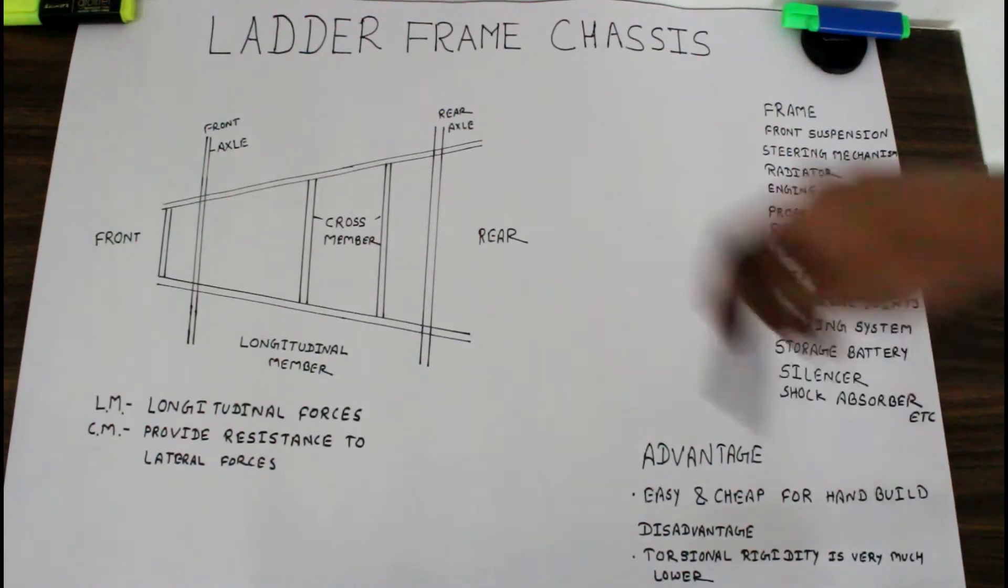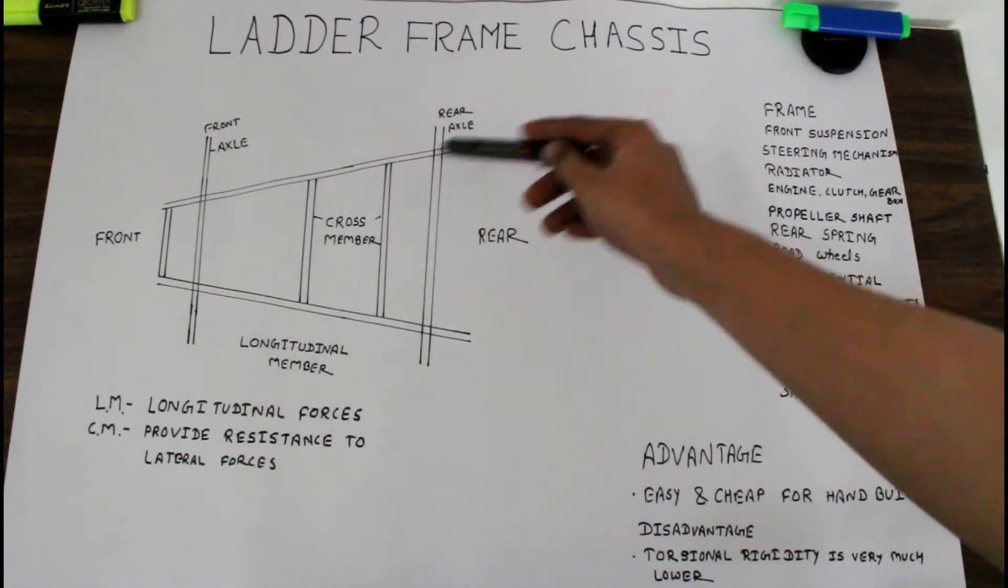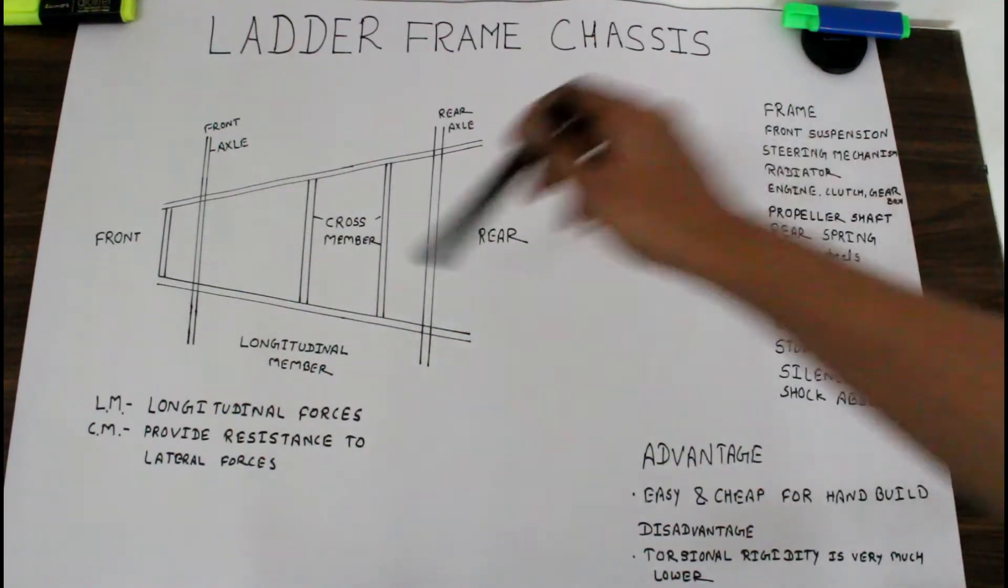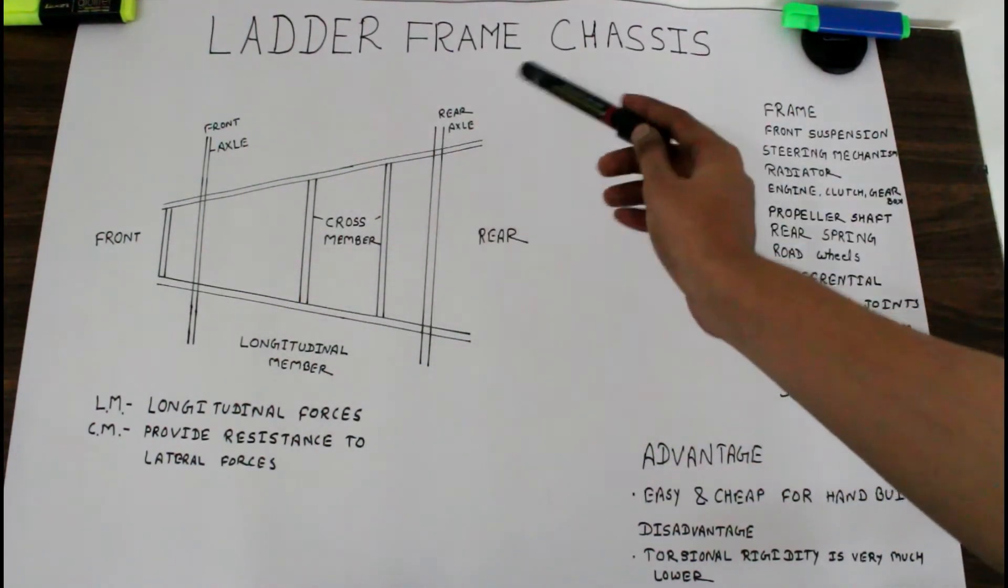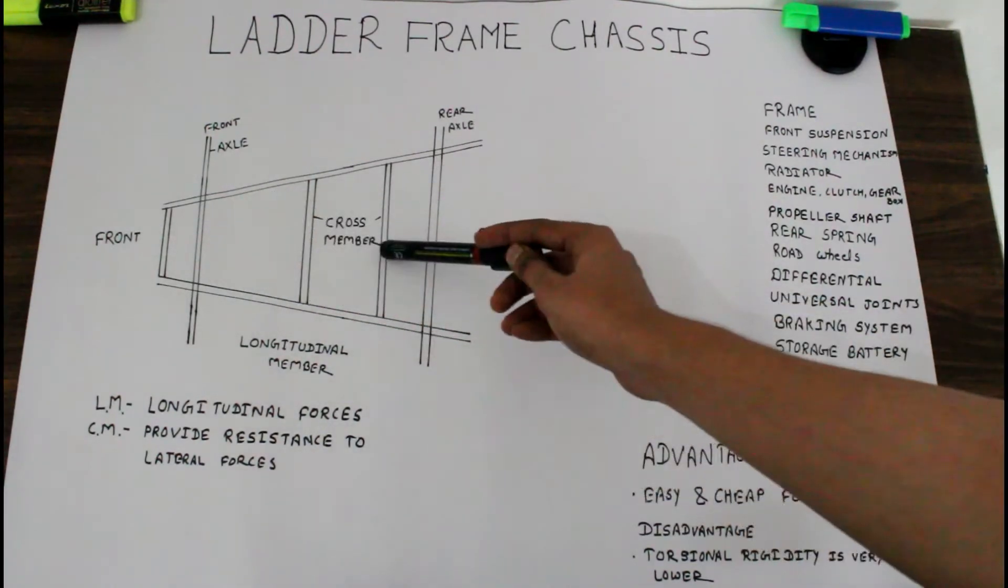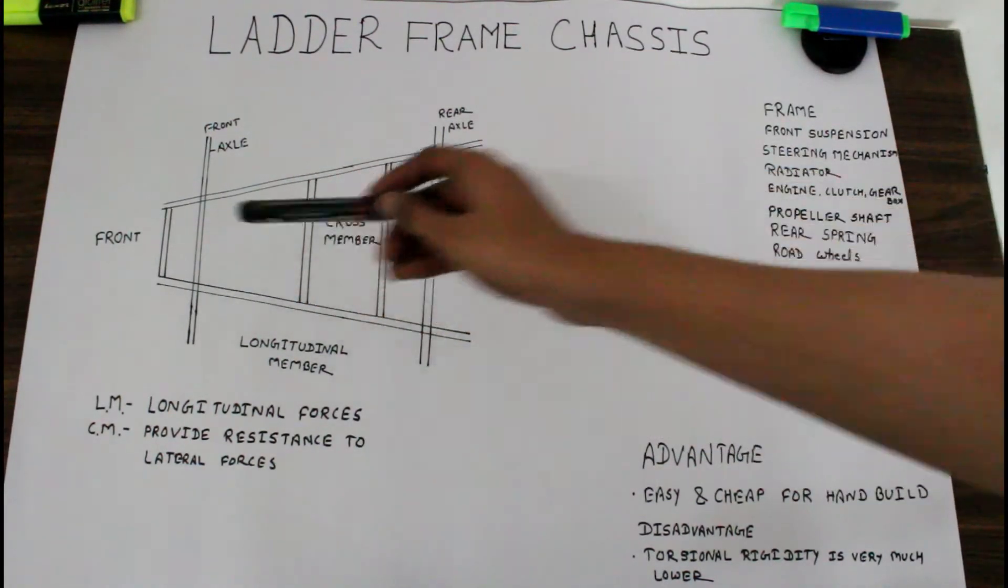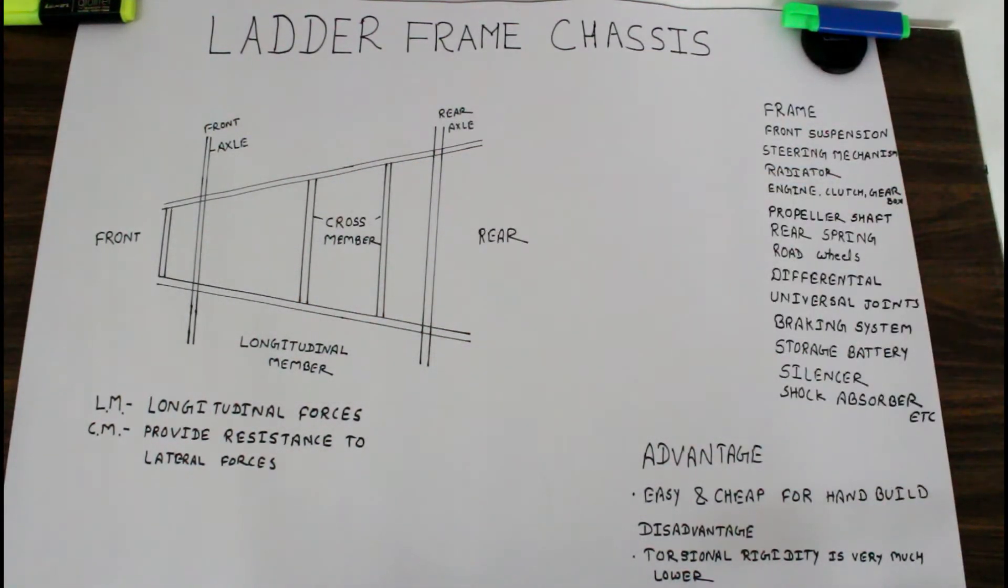This frame chassis has basically two longitudinal members and more than two cross members. These longitudinal members are interconnected with cross members in order to get a rigid structure. The longitudinal members are main stress members that deal with the load and longitudinal forces caused by acceleration and braking.